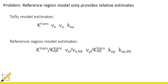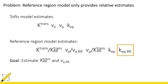Our goal was to develop a way of estimating these reference region parameters. We start by noticing that the reference region model already estimates K-ep for us, and K-ep is equal to K-trans over VE. So we only need to know either K-trans or VE and we can calculate the other parameter.